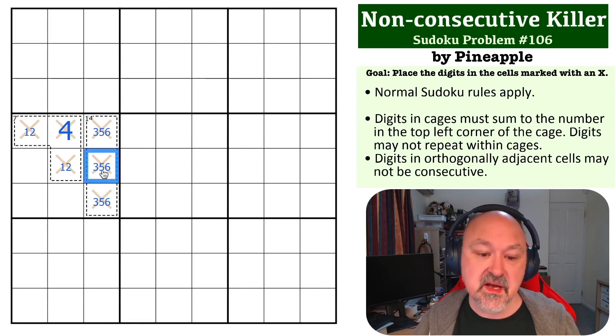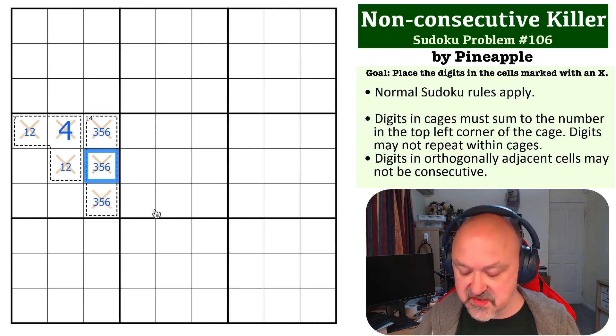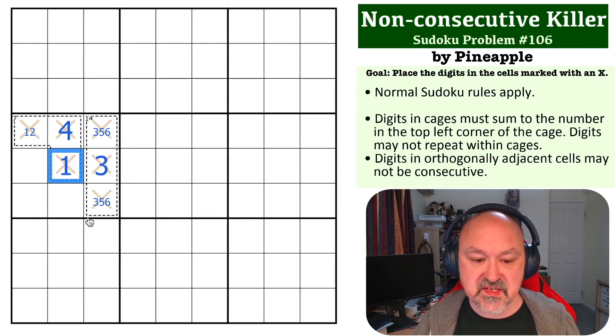So this becomes three, five, six. But if I put five in the middle, there'll be a six adjacent to it. And if I put a six in the middle, there'll be a five adjacent to it. So this becomes a three. Now this being a three means this can't be a two. So this becomes the one, this becomes the two.